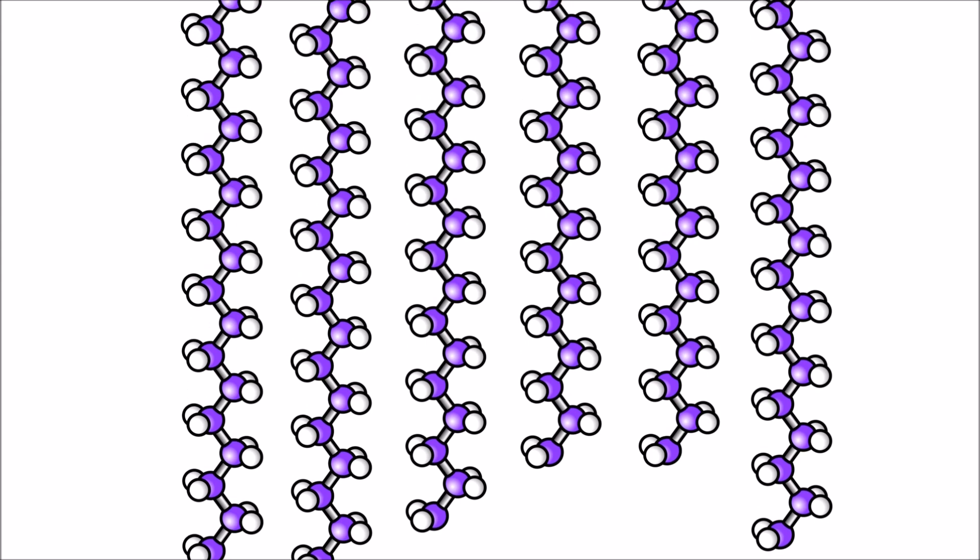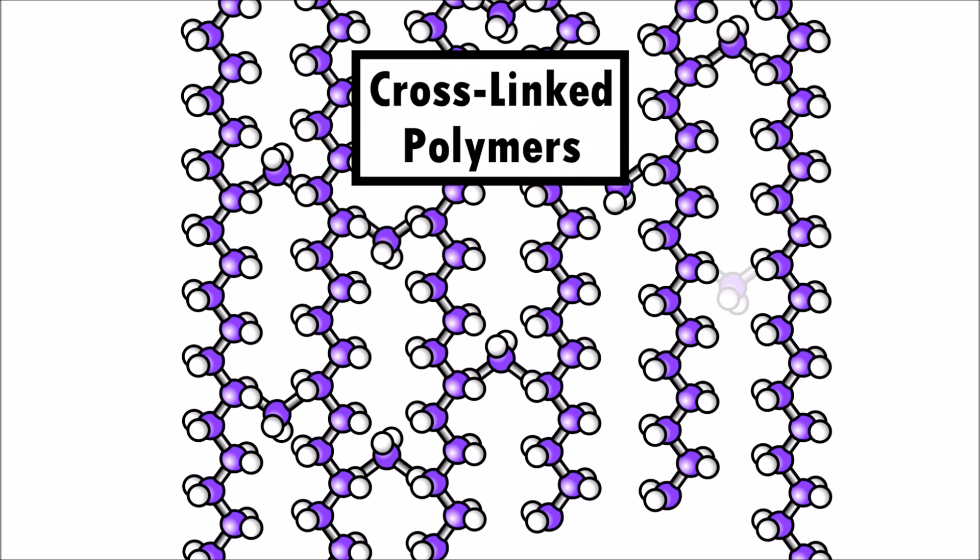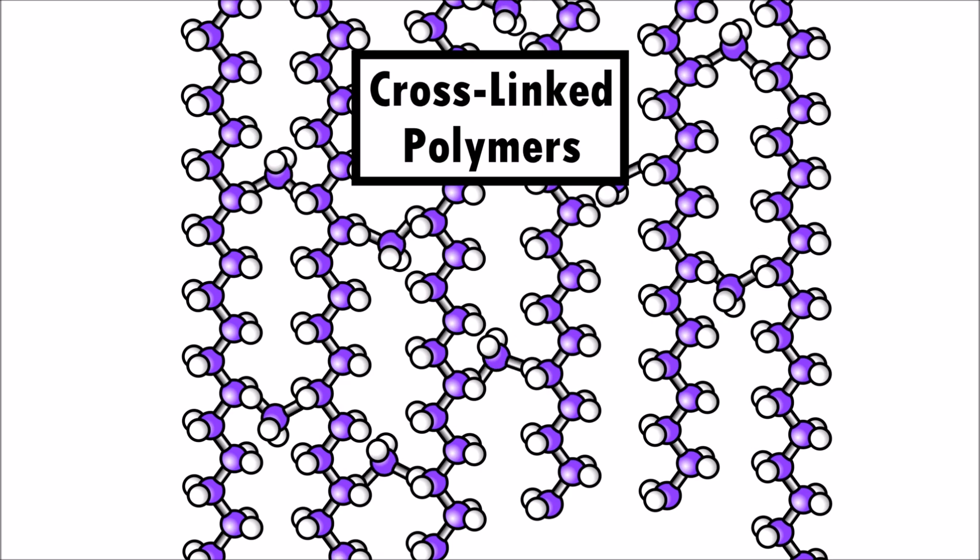Some types of slime are not as gooey and slippery as other types of slime. A chemical is sometimes added that joins the polymer chains together. These are called cross-linked polymers. They don't allow the long chains to move around as much, making this type of slime less flexible.